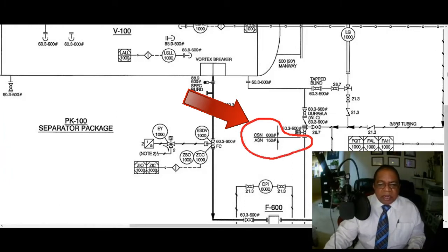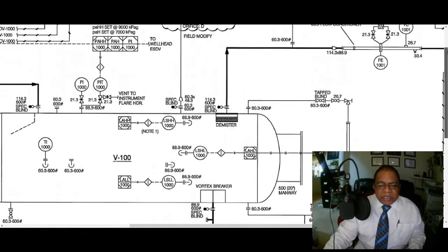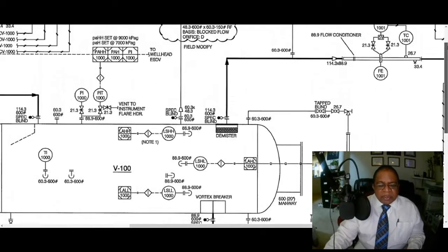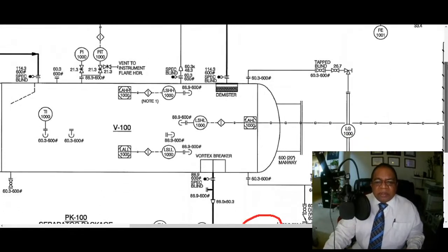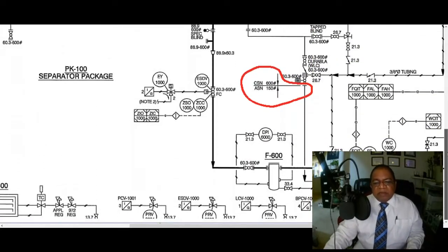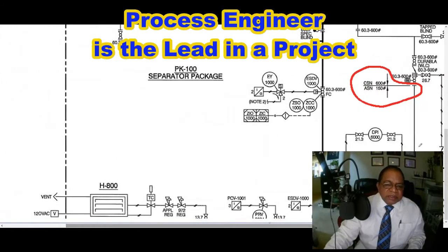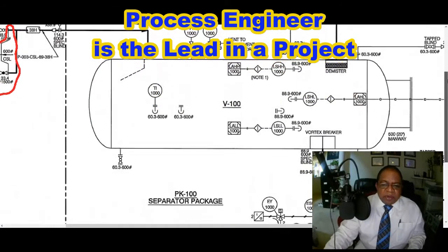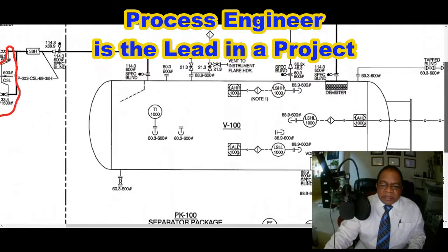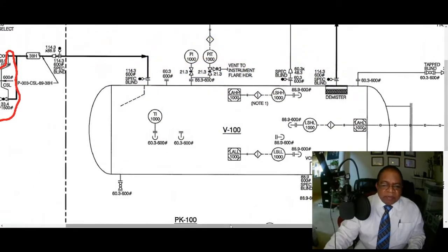He will ensure the temperature and pressure rating of the material used upstream and downstream of that spec break. After a process engineer identifies the spec break, a series of activities will follow from other disciplines. Therefore, a process engineer is sometimes called the lead person in the project.